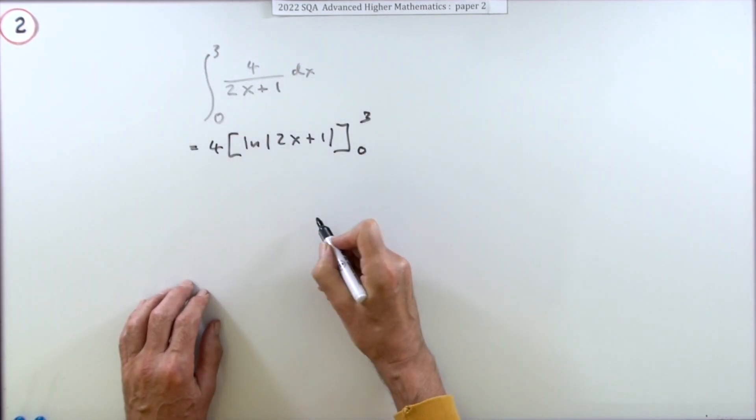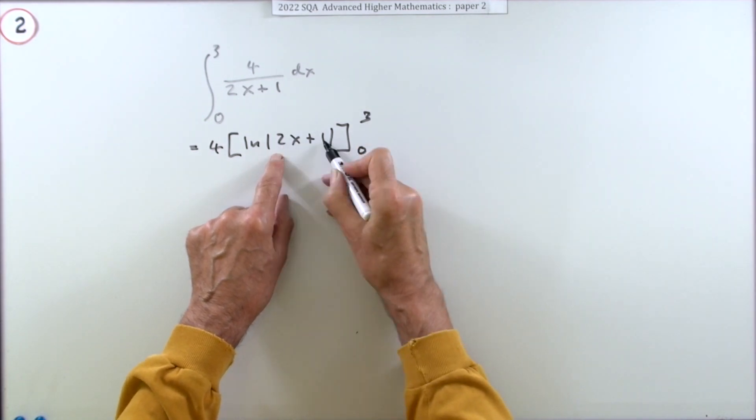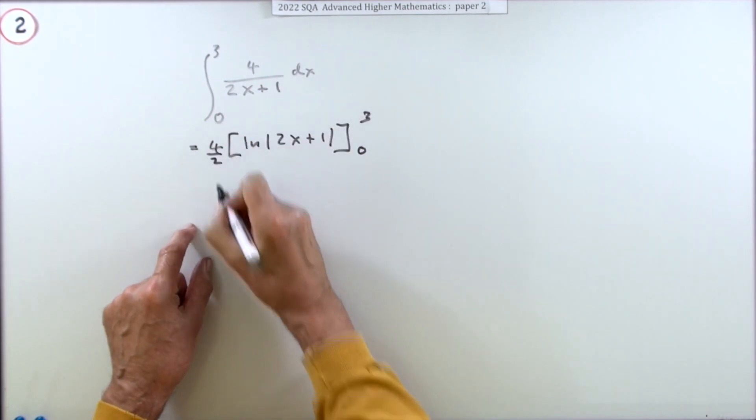But get the constants right. That four could have come out, I wasn't writing it again, so just take it out now. And because the inner function, that linear part, has got a derivative of two, I also need to divide by that two.